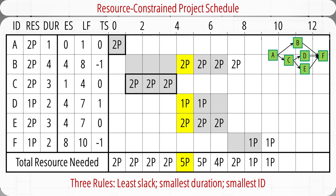For the time between weeks 4 and 5, we start to have resource shortage again — we need five programmers but only have three. We need to decide which of the three activities, B, D, or E, should be scheduled first. Applying Rule 1 again, we find activity B has the least slack now, so it should start next. Then we consider activity E — it requires two programmers, but only one is remaining, so we cannot schedule it. The next eligible activity is activity D — since it only requires one programmer, we load activity D into the schedule.